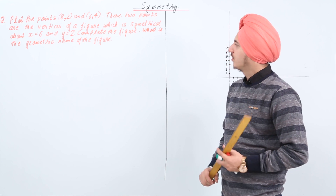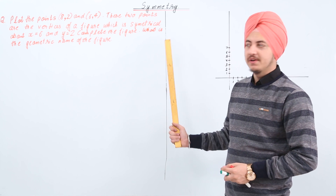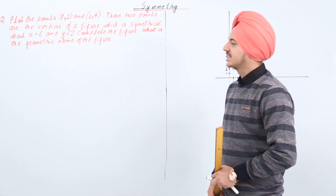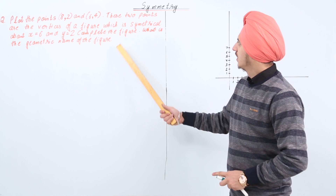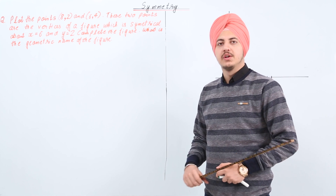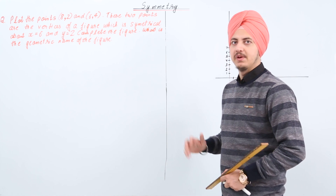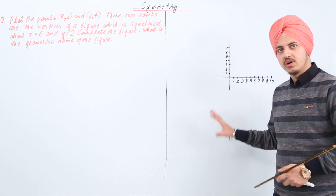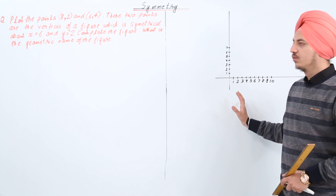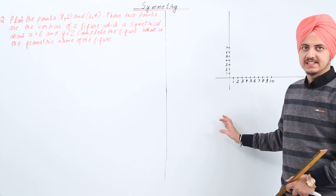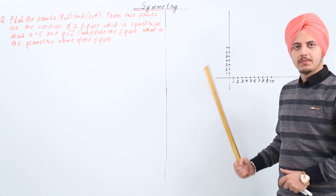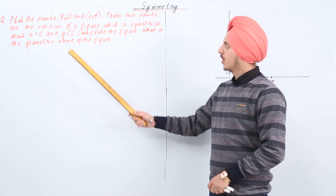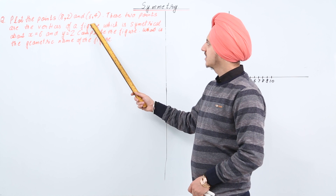The first question for the chapter on symmetry says: plot the points (8, 2) and (6, 4). First of all, I need to tell you that you need to use graph paper to solve this question, but I don't have graph paper here so I am just using the coordinate axis as such. So use graph paper to solve this question.